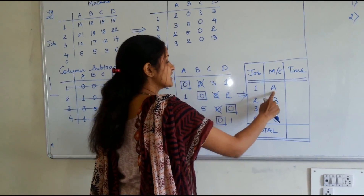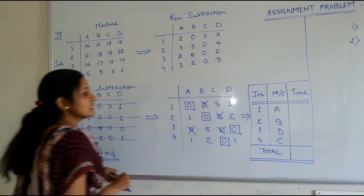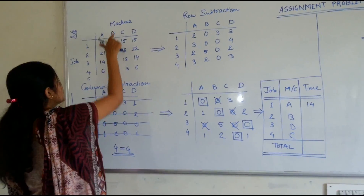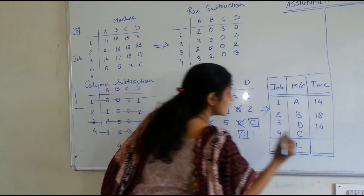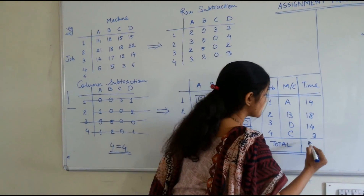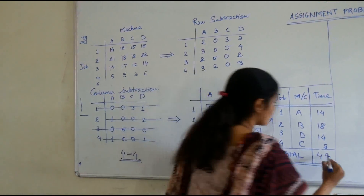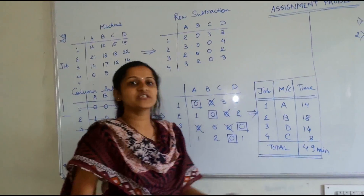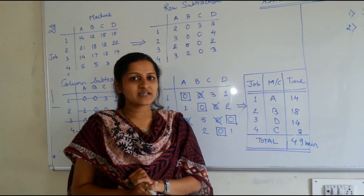Now what is the time required for each machine to perform that particular job? These figures come from the original problem. Job 1 with machine A: 14 minutes. Job 2 with machine B: 18 minutes. Job 3 with machine D: 14 minutes. Job 4 with machine C: 3 minutes. Taking the total, it comes to 49 minutes. These figures are in minutes, so 49 minutes are required to perform all 4 jobs on all 4 machines — this is the optimum solution. You cannot get lesser time than this; this is the least time obtainable using the Hungarian method. I hope that is clear. Thank you.